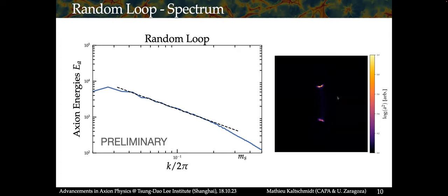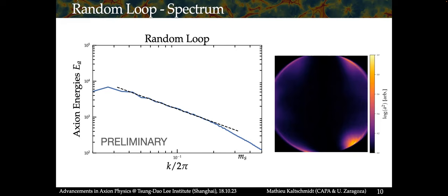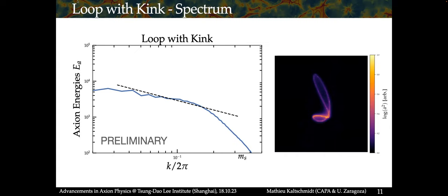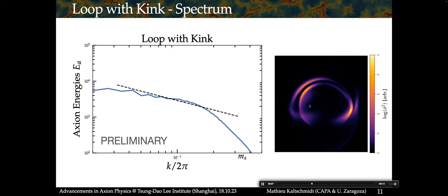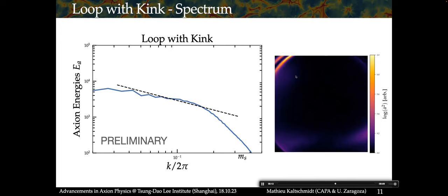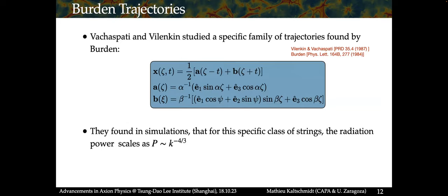We also studied more interesting shapes — distorted loops — and we already see changes in how the spectrum looks. We tried quite a few different shapes to see how they affect the spectrum. Especially interesting is the case where we have kinks — regions of extreme curvature — which give the dominant contribution to the radiation after the collapse of the loop. We studied all those different cases, and as a side project we started looking at the Burden trajectories: a specific family of trajectories that solve the equations of motion and provide elliptic initial conditions.